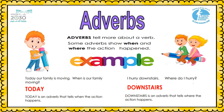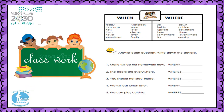Look at the second example: 'I hurry downstairs.' What is the action? Hurry. So I'm going to ask: where do I hurry? Downstairs. The adverb is 'downstairs.' Downstairs is an adverb that tells where the action happens — it shows me the place.